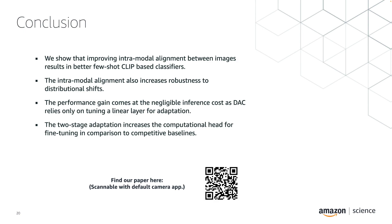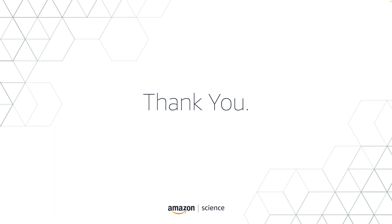In summary, we presented a few-shot adaptation method for CLIP that improves both intramodal and intermodal classification separately. We show this is beneficial not only for overall downstream classification performance, but also for robustness to distributional shifts. The gain comes at the negligible cost of tuning an additional linear layer, which is not an issue at inference time. If you're interested in more details, please feel free to reach out or check out our paper. Thanks a lot.